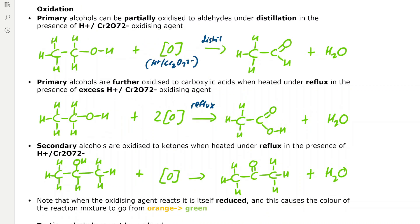We need to know about some oxidation reactions of alcohols and how to write the equations. Primary alcohols can be partially oxidized to aldehydes when we distill them in the presence of acidified potassium dichromate, which is H⁺/Cr₂O₇²⁻, which is an oxidizing agent.